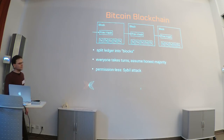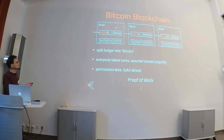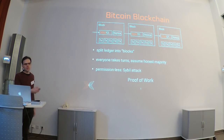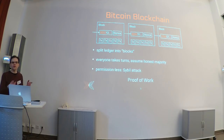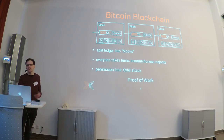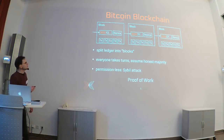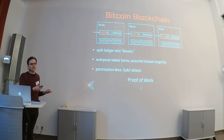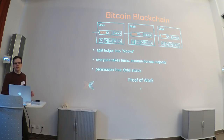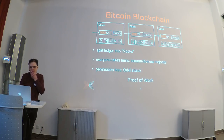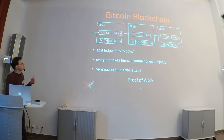With proof of work, you don't allow just any block to be valid. In addition to transactions, block creators can add an arbitrary string (a nonce) that modifies the block's hash. Valid blocks must have the first N bits of their hash be zero. This makes it no longer trivial to create a block — you must try again and again until by chance you get a hash matching this condition. So creating a block has a cost: CPU power.